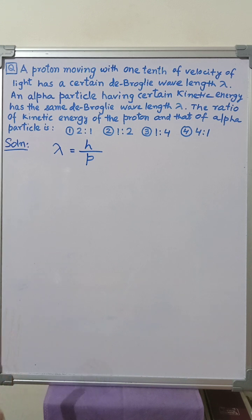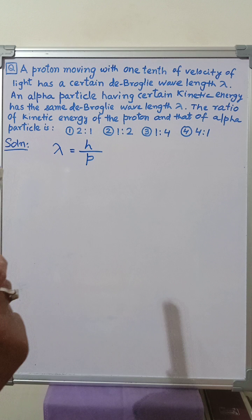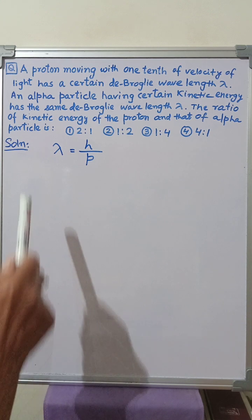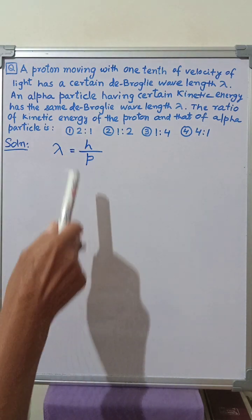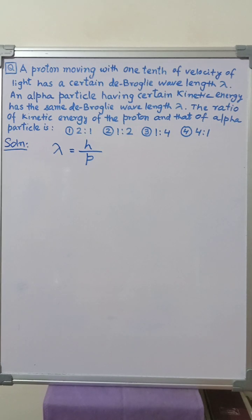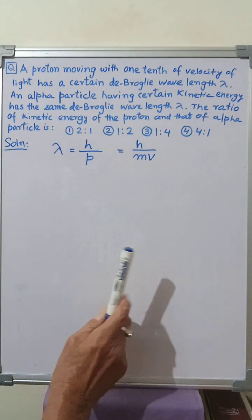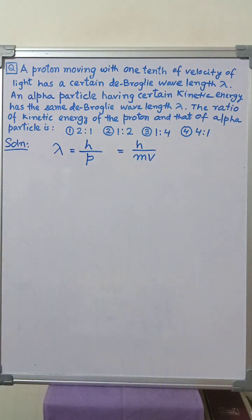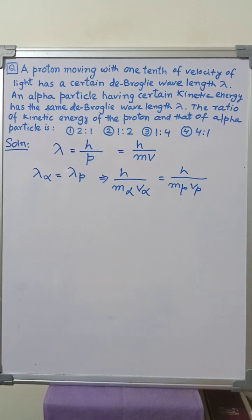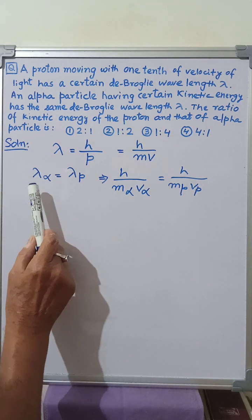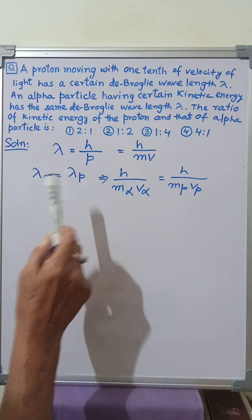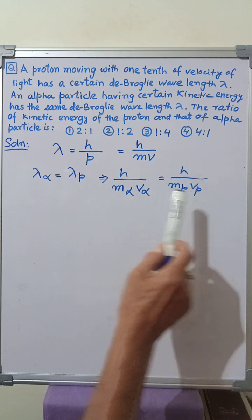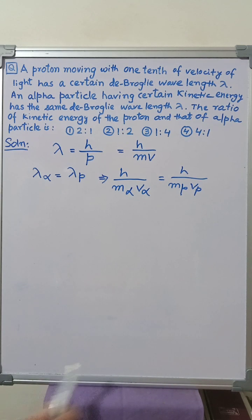The de Broglie wavelength associated with a fundamental particle moving with linear momentum p is given by lambda equals h by p, where h is Planck's constant. Now momentum p equals mass times velocity, therefore we get de Broglie wavelength lambda equals h by mv. It is given in the question that the de Broglie wavelength associated with the alpha particle is the same as that of the proton, therefore we can write h by m_alpha v_alpha equals h by m_p v_p.